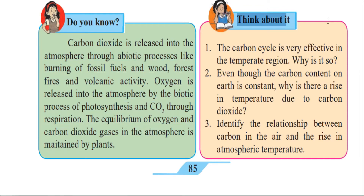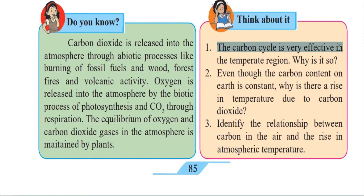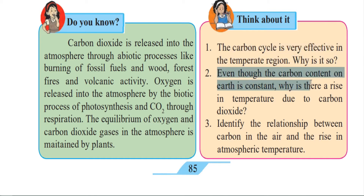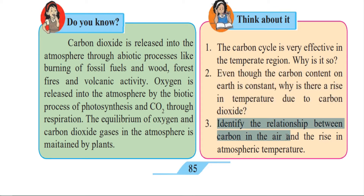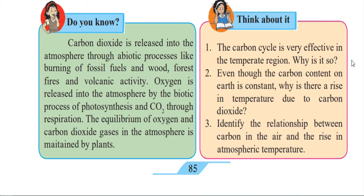Think about this: the carbon cycle is very effective in the temperate region — why is that so? You can go through the internet or Google to find your answers. Even though the carbon content on earth is constant, why is there a rise in temperature due to carbon dioxide? Lots of factories are releasing a lot of carbon dioxide. Identify the relationship between carbon in the air and the rise in atmospheric temperature. You can visit our website at www.jkacademypro.com — you will get the link in the description box below.